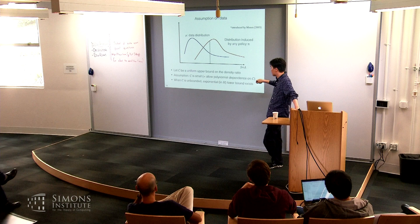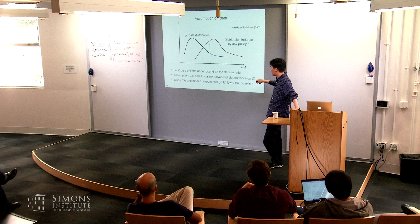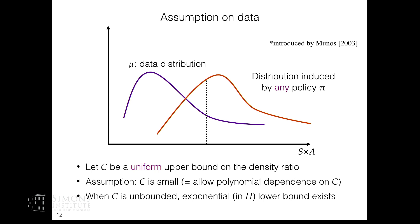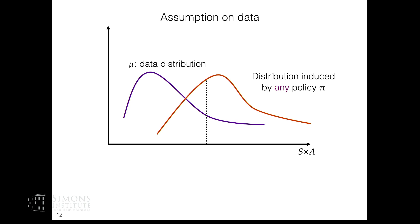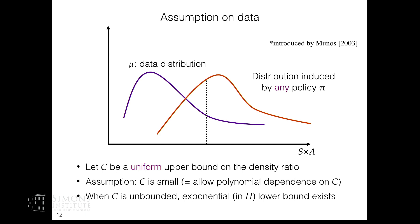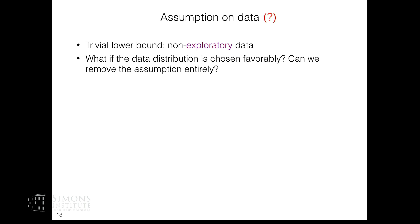We show in the paper that this assumption is necessary. If you remove it — that is, if C is unbounded — there exists an exponential lower bound. But the nature of this lower bound is subtle. There's a trivial failure mode when you don't assume an upper bound on C: if your data looks like a spike over a single state-action pair with data missing everywhere else, of course you can't learn because the data is not sufficiently exploratory.